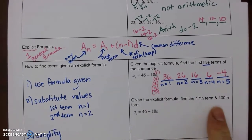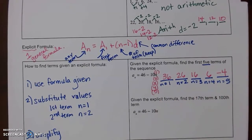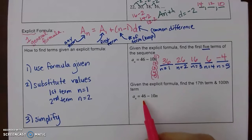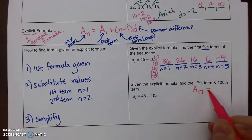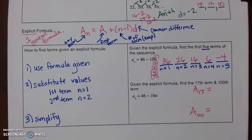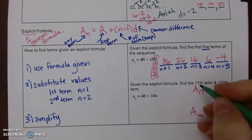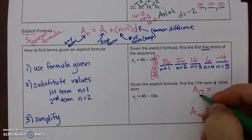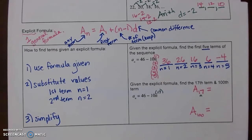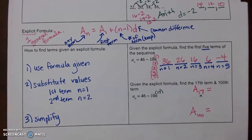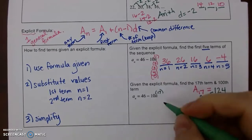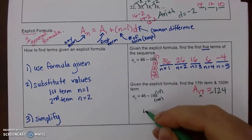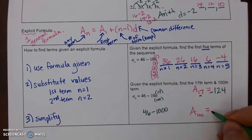We can find any random term without finding all the preceding ones. To find the 17th term (a sub 17), substitute n = 17: 46 minus 170 = -124. To find the 100th term (a sub 100), substitute n = 100: 46 minus 1000 = -954.